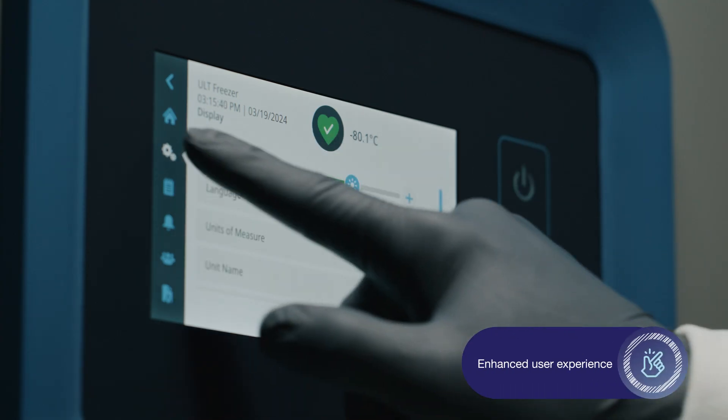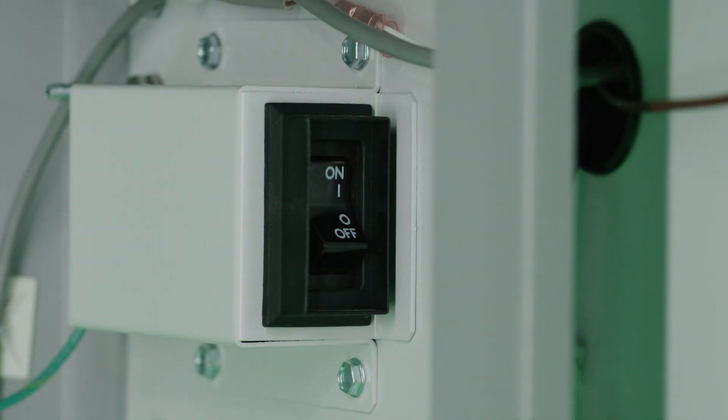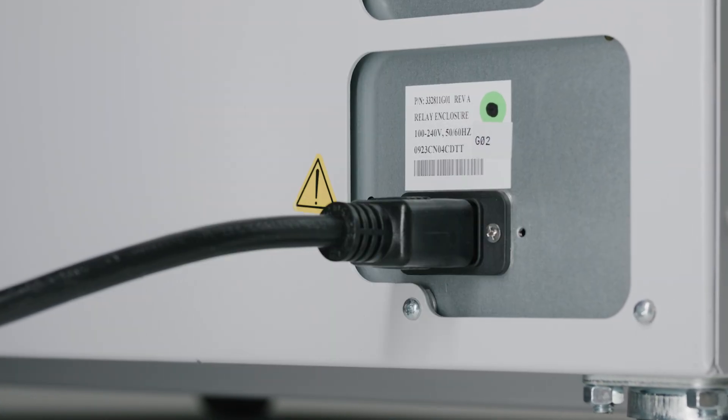Universal isn't just a name, it's a design. TSX Universal ULT freezers can internally regulate voltage, so simply plug in the unit's power cord anywhere nearby.